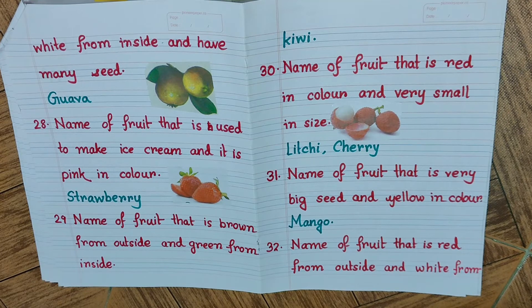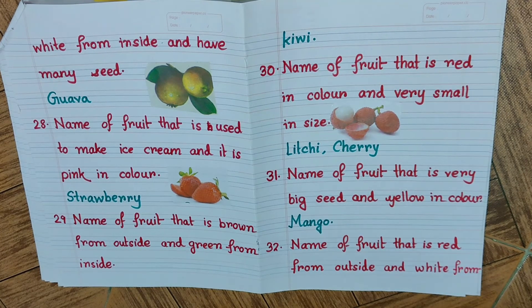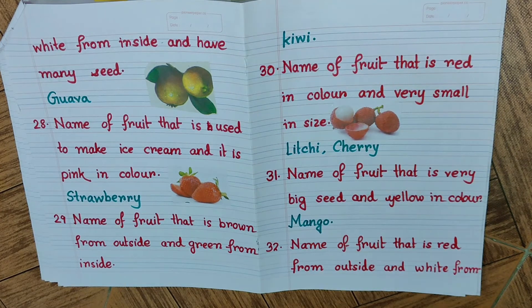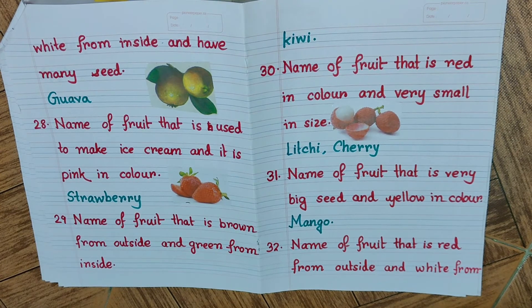Lots of fruits are used in ice cream these days, but earlier only one fruit was used — that is strawberry. Strawberry is used as a topping on vanilla flavor ice creams mainly. Question number twenty-nine: name a fruit that is brown from outside and green from inside. We are talking about kiwi — kiwi is brown from outside and green from inside.